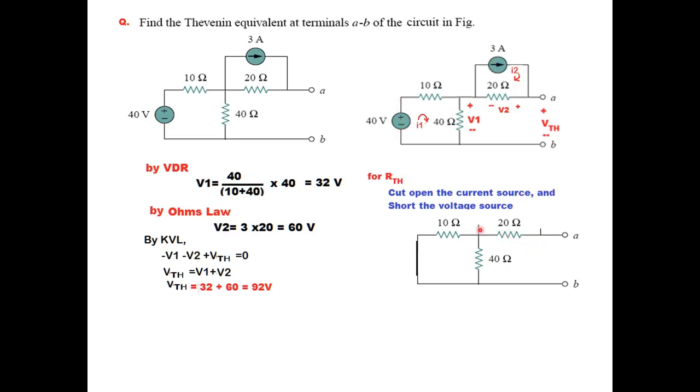This is the equivalent circuit. Again, we are looking from this direction, so these two are in parallel along with 20 ohms in series. RTH is 10 parallel with 40 plus 20, and this gives you 28 ohms.